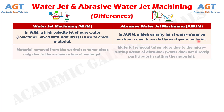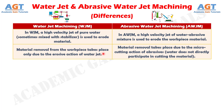Number 2: In water jet machining, material removal from the work piece takes place only due to the erosive action of the water jet. Whereas, in abrasive water jet machining, material removal takes place due to the micro cutting action of abrasives. Water does not directly participate in cutting the material.